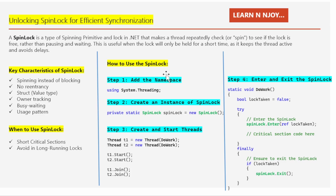Now the interesting part: how to use the spin lock. The spin lock implementation is pretty easy — we just need to follow four steps. Step number one: add the namespace. We need to add the namespace System.Threading.